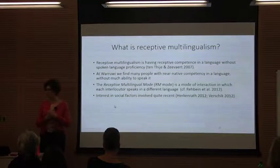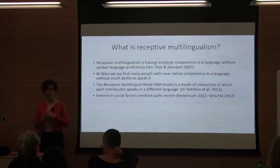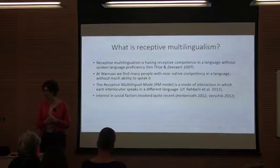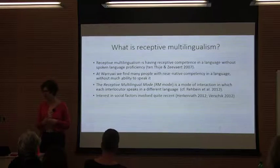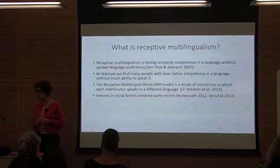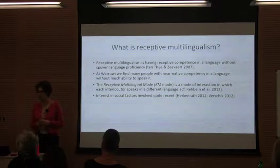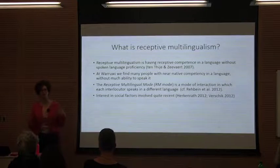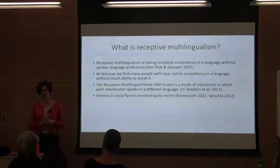Receptive multilingualism is described generally as people having receptive competence in a language without being able to speak it. At Wadawi, we find many people like Richard — he understands Maung perfectly, people speak to him all the time, but he doesn't really speak it; he'll use a phrase or a word. We can also talk about the receptive multilingual mode: a way of having a conversation where each person speaks a different language. They understand each other but choose to use their own language. A lot of earlier work on receptive multilingualism ignored social factors, focusing on the idea that it's a practical strategy where languages are similar — but obviously these languages are from completely different families.